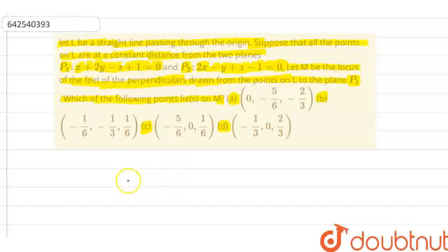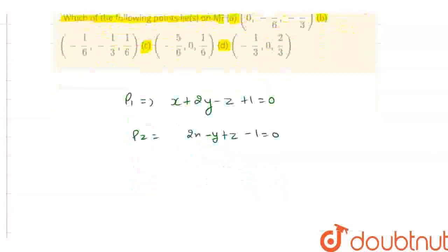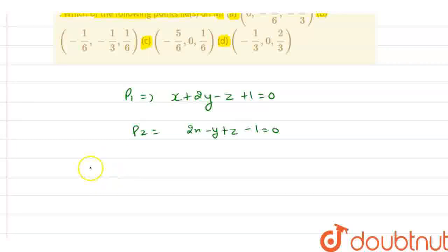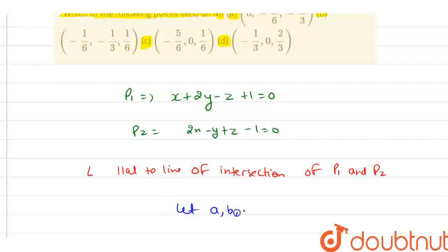In this question we are given two planes. First is P1: x + 2y - z + 1 = 0. Next we have P2: 2x - y + z - 1 = 0. Now the line L will be parallel to the line of intersection of planes P1 and P2.